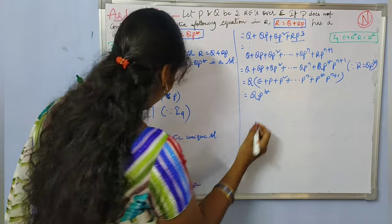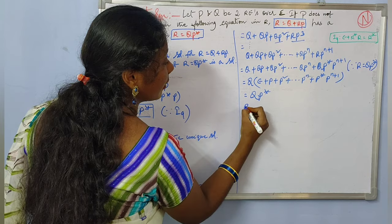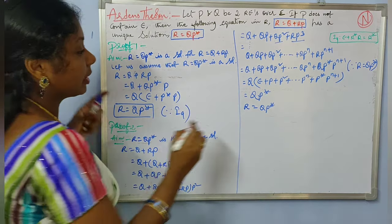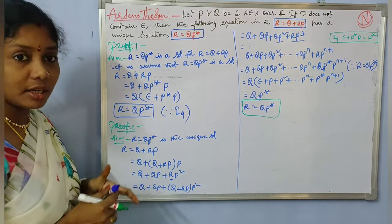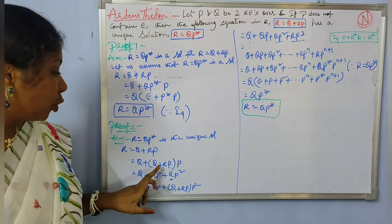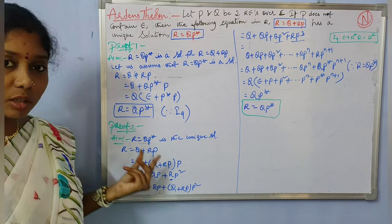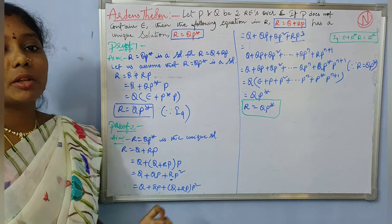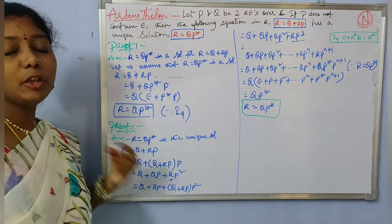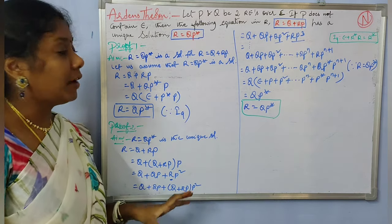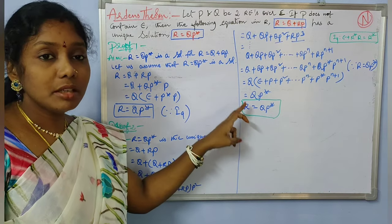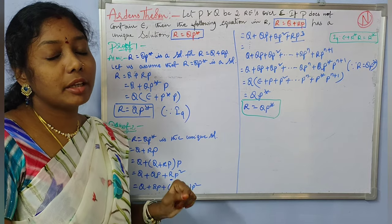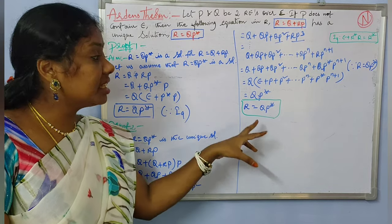Finally, what we get is R equal to QP star. No matter what value we start with or what substitutions we make, the final solution we obtain is always R equal to QP star. In any way or any manner you try, you finally get only the solution QP star. So we can say that this is the unique solution.